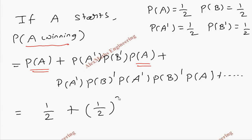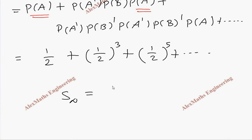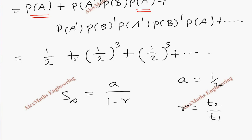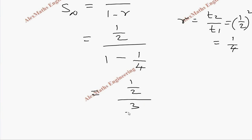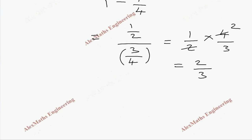Substituting values: first term is 1/2; the next valid term is (1/2)³, and the one after is (1/2)⁵, so the series is 1/2 + (1/2)³ + (1/2)⁵ + ... This is an infinite GP with a = 1/2 and r = (1/2)³ ÷ (1/2) = (1/2)² = 1/4. So S∞ = (1/2) / (1 − 1/4) = (1/2) / (3/4) = 2/3. The probability of A winning is 2/3.